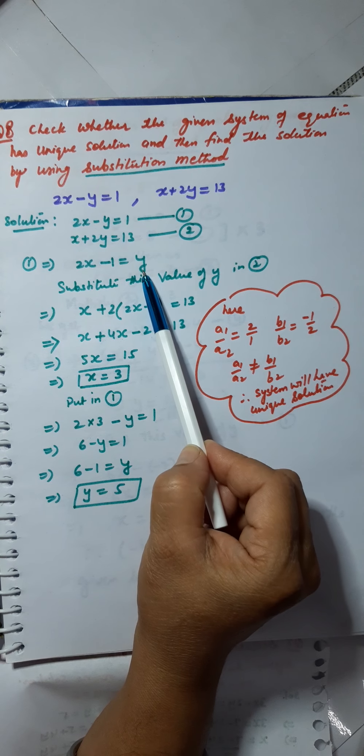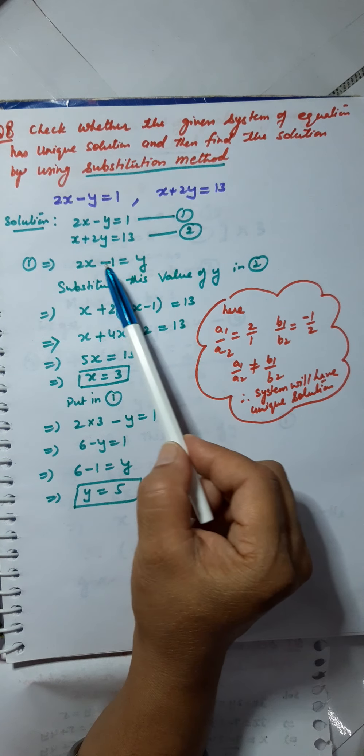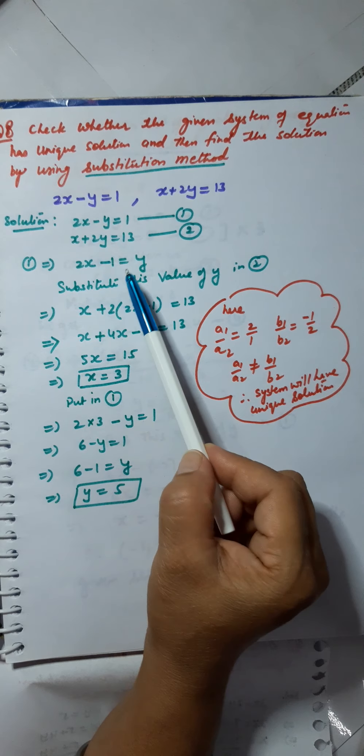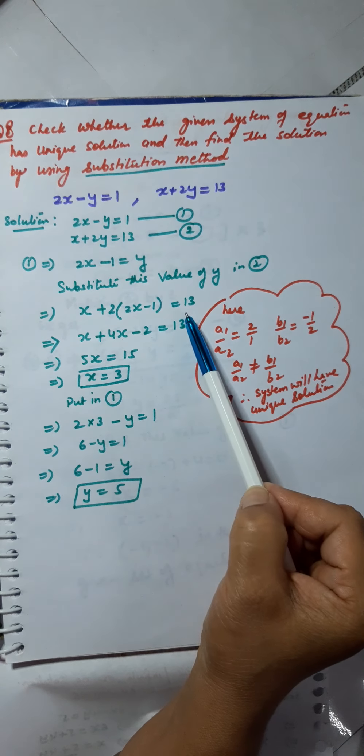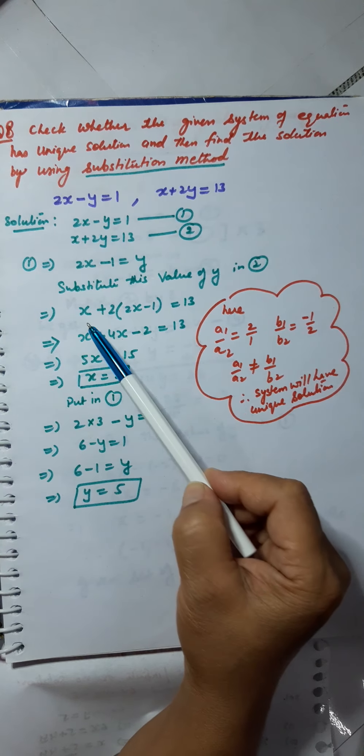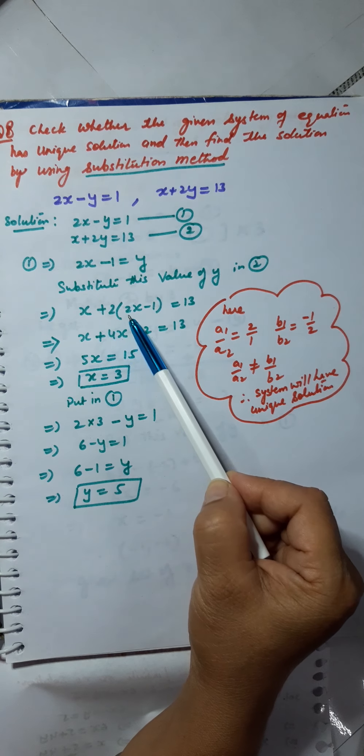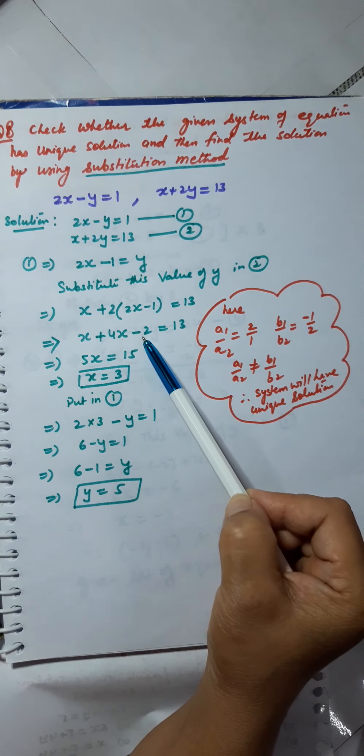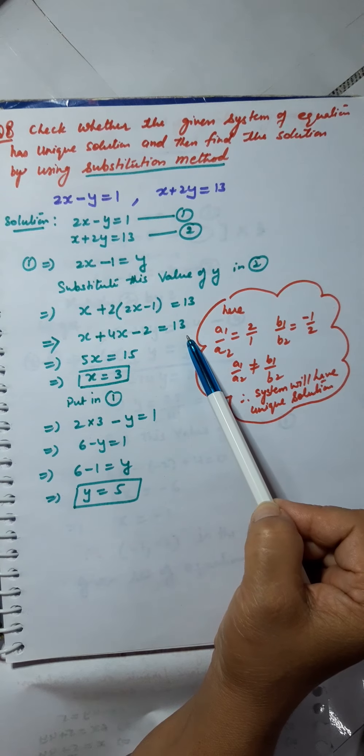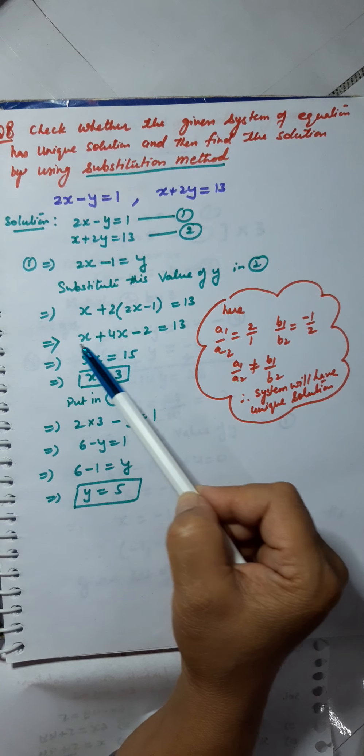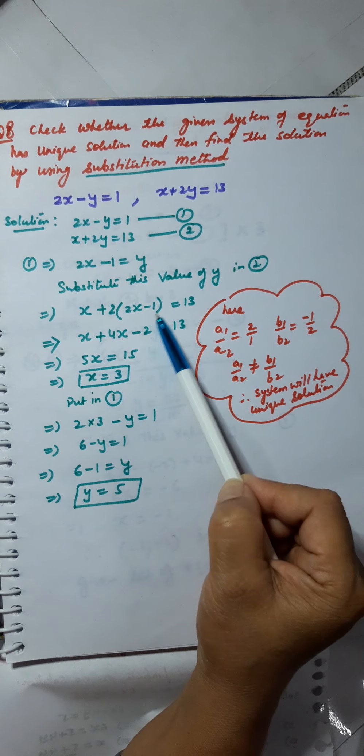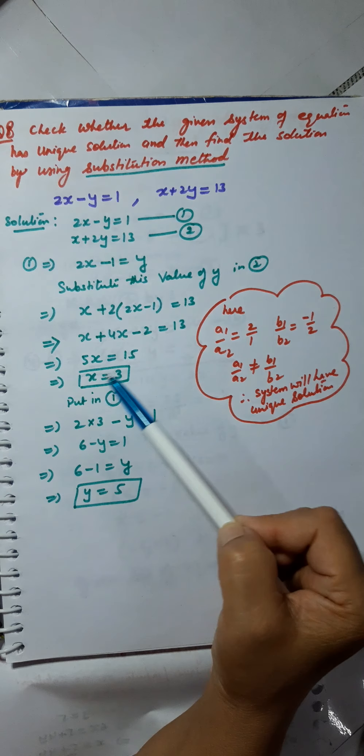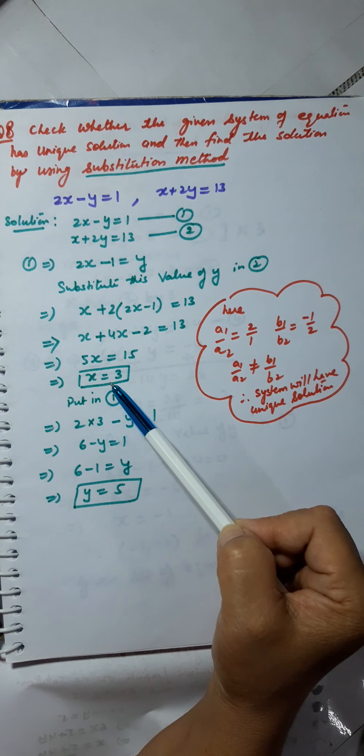Put this value of y in number 2. So I get x plus 2 times 2x minus 1 equals 13, which implies x plus 4x minus 2 equals 13, which implies 5x equals 15. This gives me x equals 3.